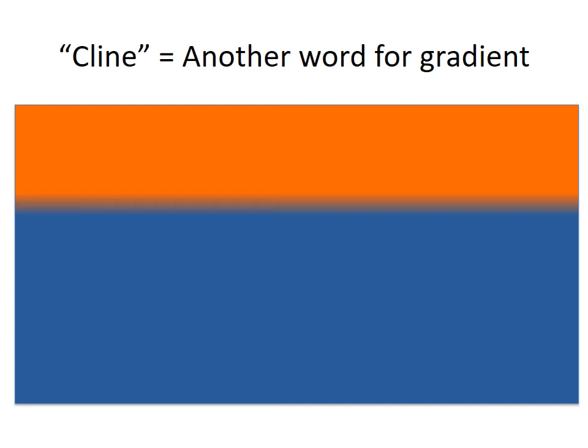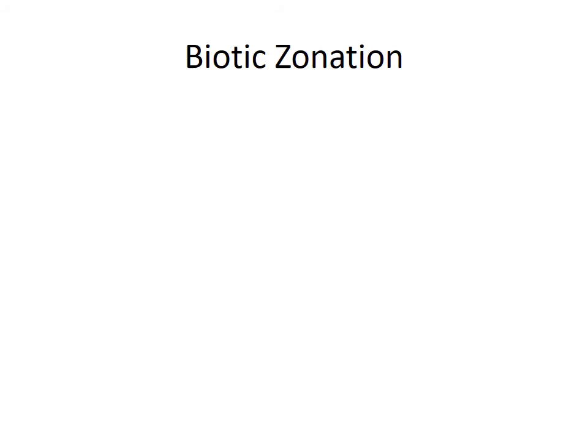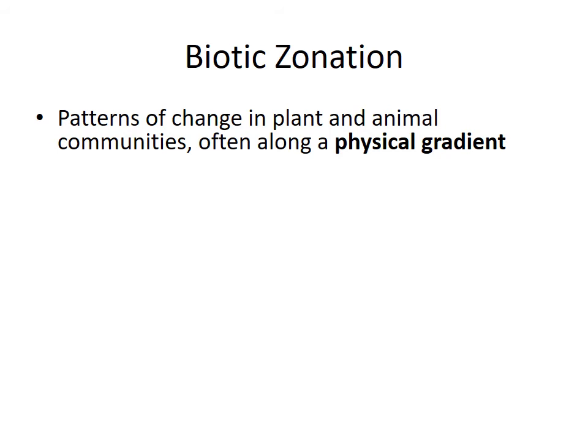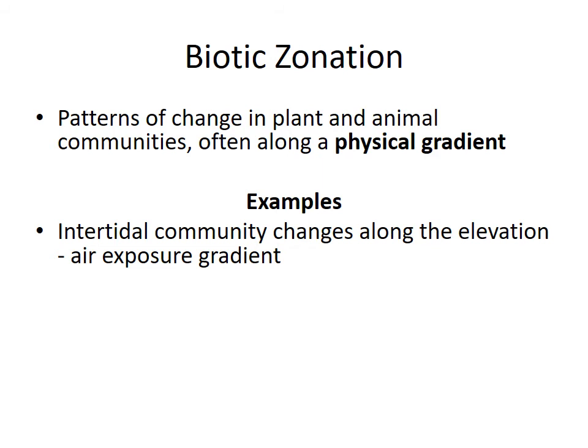Scientists sometimes use the suffix '-cline' to mean gradient — so thermocline means temperature gradient, and halocline means salinity gradient. When '-cline' is used, it usually refers to a sharp transition in conditions within a certain range of the environment. Because of underlying abiotic gradients, you get patterns in life called biotic zonation. An example of biotic zonation is the change in intertidal community along the elevation gradient on rocky shores.